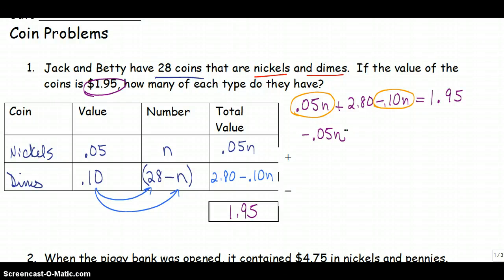And notice I wasn't moving it across the equal sign, so I'm just combining my like terms. I'm not using any inverse operations at this point. So plus 2.80 is equal to $1.95.